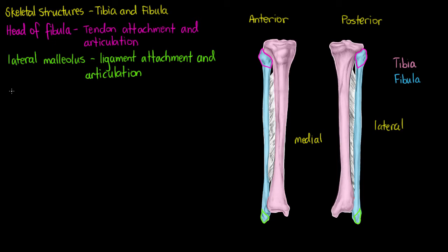So we can jump straight over to our tibia now and see its unique structures. Our tibia is the bone we commonly refer to as our shin bone, and due to it being much larger than our fibula it naturally has a few more features. The first of which is our tibial tuberosity, which I'm outlining here.